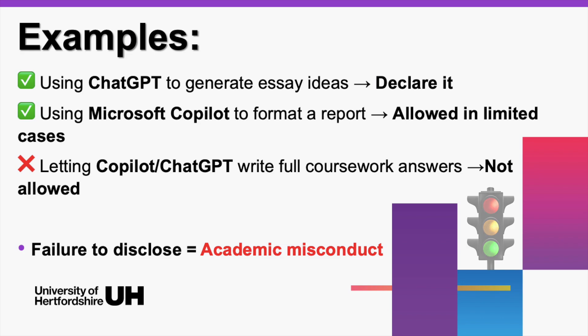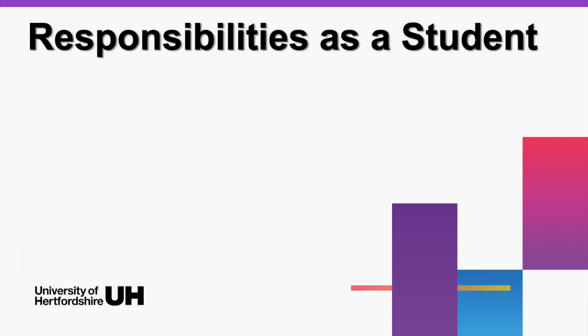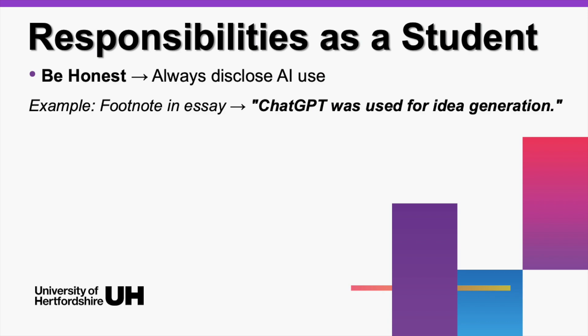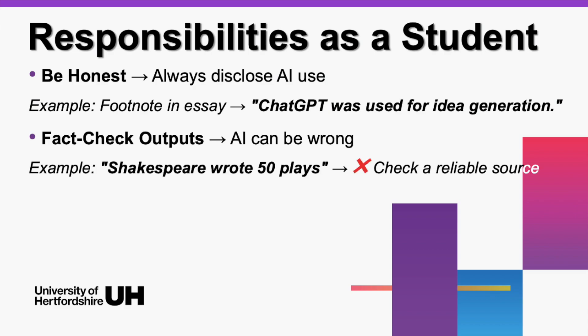Now let's talk about your responsibilities. AI isn't a get-out-of-work-free card. It's a tool, and like any tool, you need to use it properly. Here are three golden rules. Be honest — always disclose AI use. For example, if you used ChatGPT to brainstorm for a marketing essay, add a short note in your references: 'ChatGPT was used for idea generation.' Easy, right? Fact-check outputs — AI sometimes lies. Yes, lies.